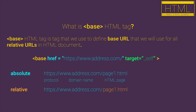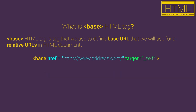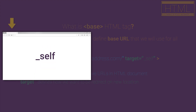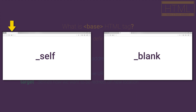Basically, with the base HTML tag we can define a base URL for all relative URLs in that HTML document. Two important attributes used with base are href, which represents the base URL for relative URLs in the HTML document, and the target HTML attribute, which represents how we want to be redirected to the new location. Two values we usually use are _self, which means we'll be redirected in the same tab, and _blank, which means we'll be redirected in a new tab.